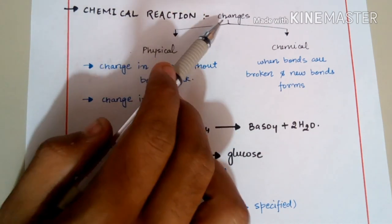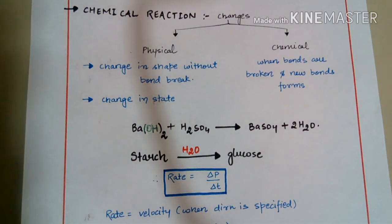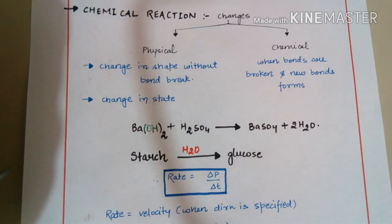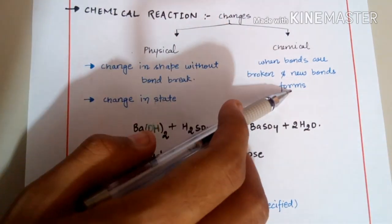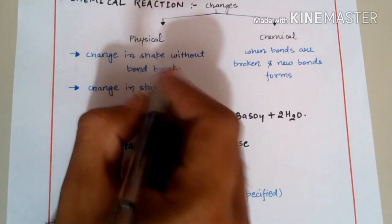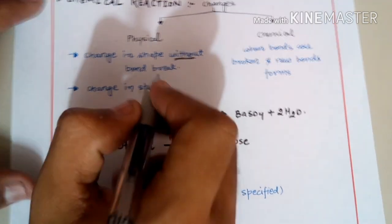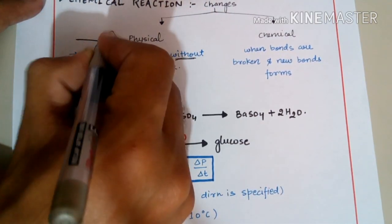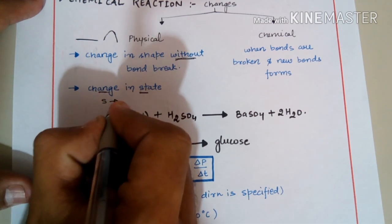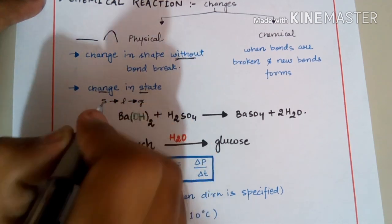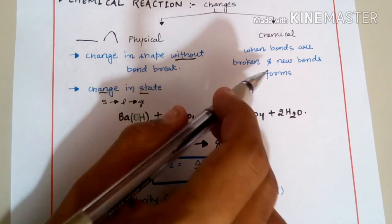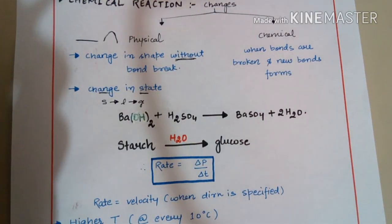In chemical reactions, two types of changes can occur: physical changes and chemical changes. A physical change is a change in shape without bond breaking, or a change in state (solid to liquid, liquid to gas). A chemical change occurs when bonds are broken and new bonds are formed.